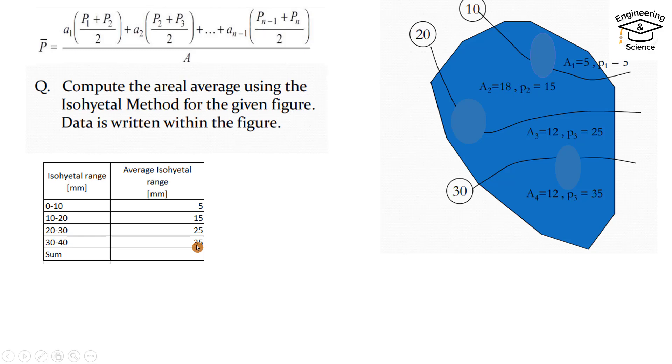Then area: area between isohyet 0 and 10 is 5, area between isohyet 10 and 20 is 18, area between isohyet 20 and 30 is 12, area between isohyet 30 and 40 is 12 also. The summation of all the area is 47.